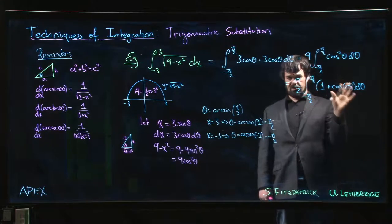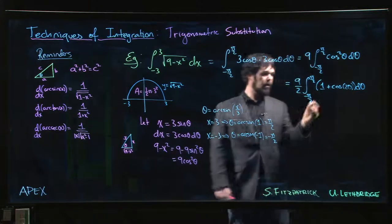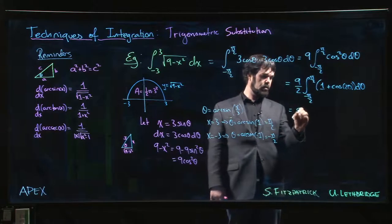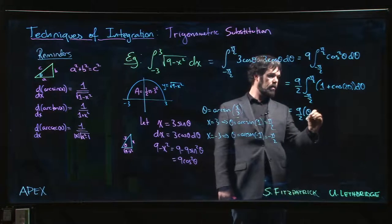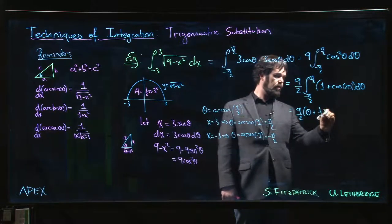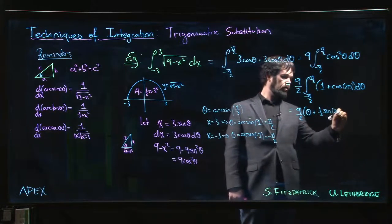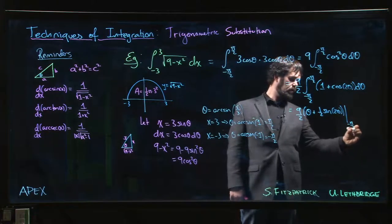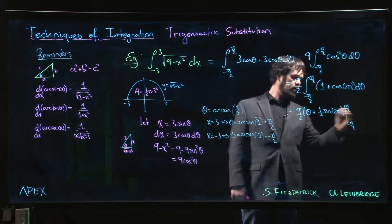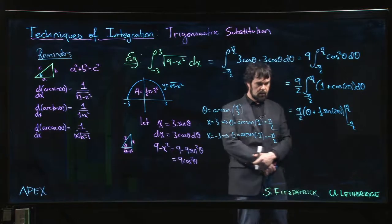So remember that cos squared is 1 plus cos 2 theta all divided by 2. I put the 2 out front just to keep things clean. Now we integrate. 9 over 2 times theta plus 1 half sine 2 theta. And we evaluate from minus pi over 2 to pi over 2.